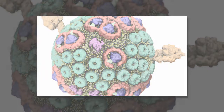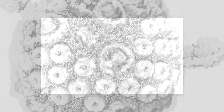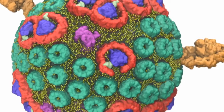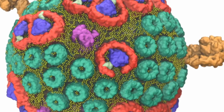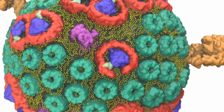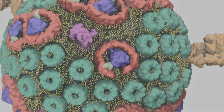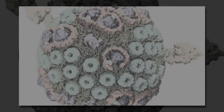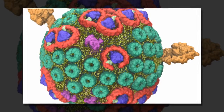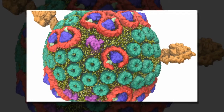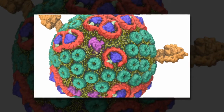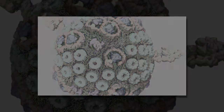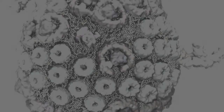As a computational biophysicist, Schulten unites biologists' experimental data with the physical laws that govern the behavior of matter. This combination allows him to simulate biomolecules, atom by atom, using supercomputers. The simulations reveal interactions between molecules that are impossible to observe in the laboratory, providing plausible explanations for how molecules carry out biological functions in nature.